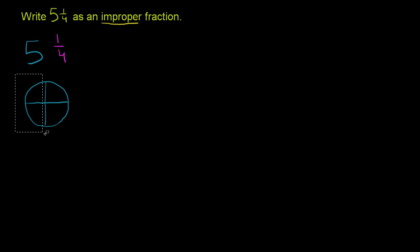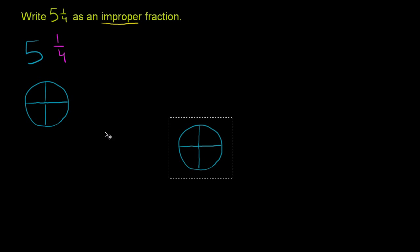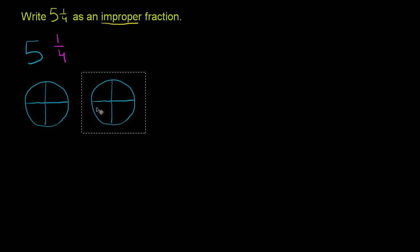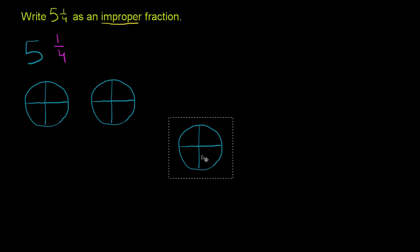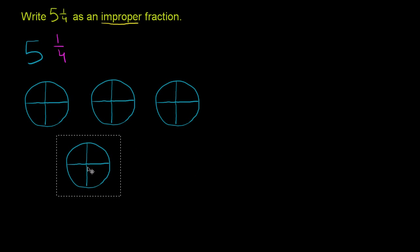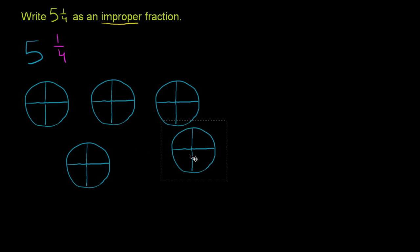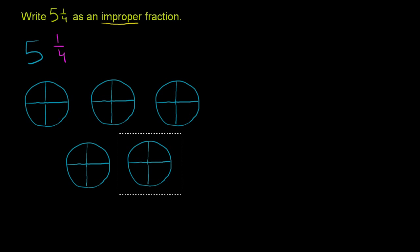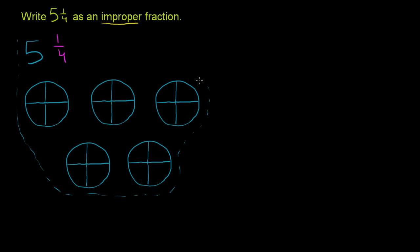So that's 1 pie right over there. Let me copy and paste this. So I have 2 pies, then 3 pies, then 4 pies, and then 5 pies. So this is what the 5 represents — let me circle all of this together. That is the 5 part right there. It represents 5 whole pies.